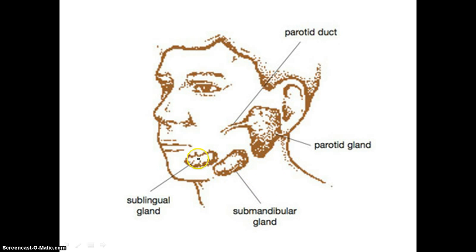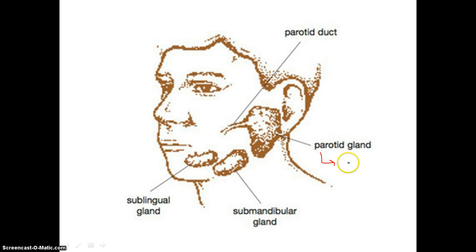All of these give off substances that moisten food, bind food together, and help to keep your mouth low in bacteria — they help to kill bacteria. However, one of these glands, this big guy right here, gives off a lot of a certain substance called amylase.